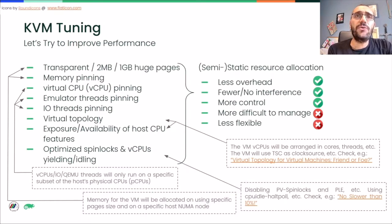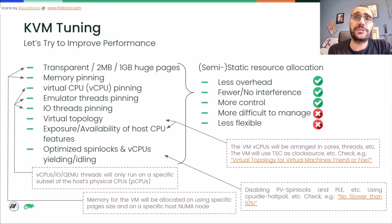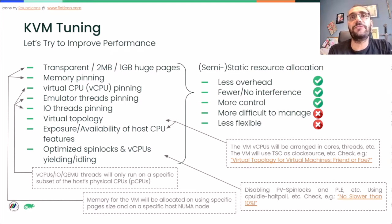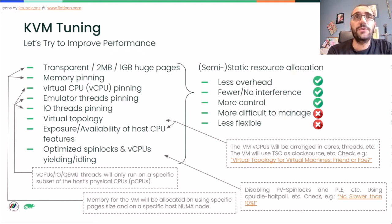So how can we tune the performance of a VM? One way is doing some kind of static or semi-static resource partitioning. This means doing vCPU and memory pinning and defining a virtual topology for the VM as well. We can also improve performance using huge pages, isolating the vCPUs from the interference of any IO activity, and a couple of other things.